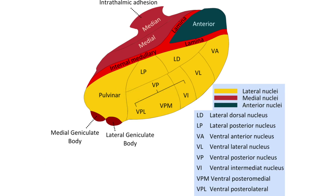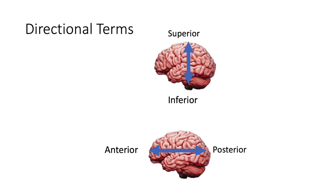They're kind of confusing to learn because the same nucleus might be called the dorsomedial or the medial dorsal, depending on which textbook you're reading. Quick reminder about directional terms, because you really need to have these down to memorize the thalamic nuclei.